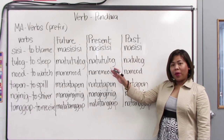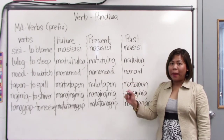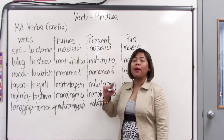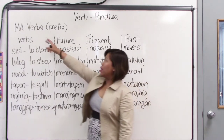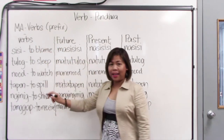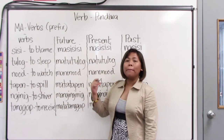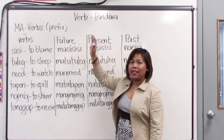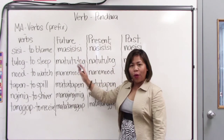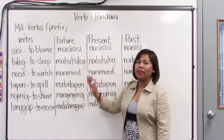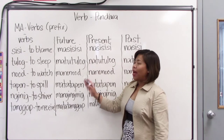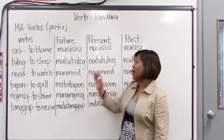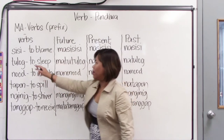On the board are some examples of ma verbs. Just like in the previous lesson we had the mag verbs, the prefix ma is like the prefix mag. They're both prefixes, so they are added before each word or before the verb. And they are added when you are forming the future tense of the verb. So let's look at the first one.